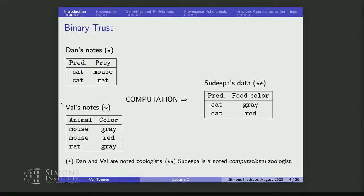And Dan has determined, without any doubt, that cats eat mice and rats. And Val has determined that he's a color specialist. So he's determined that mice are gray and red. And rats are gray. Now, Sudipa, on the other hand, and there are many more scientists nowadays, are data scientists.